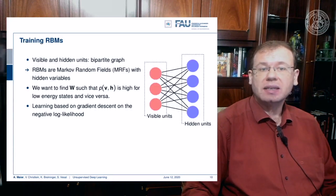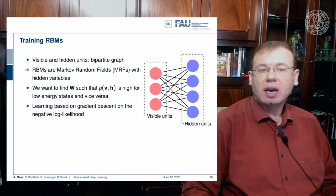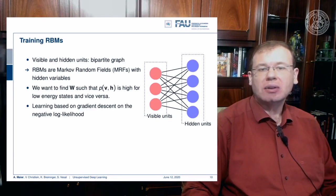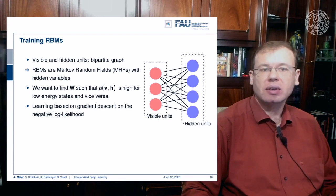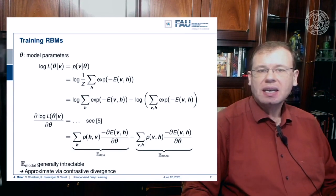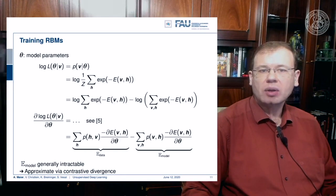The visible and hidden units form a bipartite graph. You could argue that RBMs are Markov random fields with hidden variables. We want to find W such that probability is high for low energy states and vice versa. The learning is based on gradient descent on the negative log likelihood. There is a small mistake on the slide — we are missing a log in P(V | θ) — but this is fixed in the next line where we have the logarithm of 1/Z and the sum over the exponential functions.